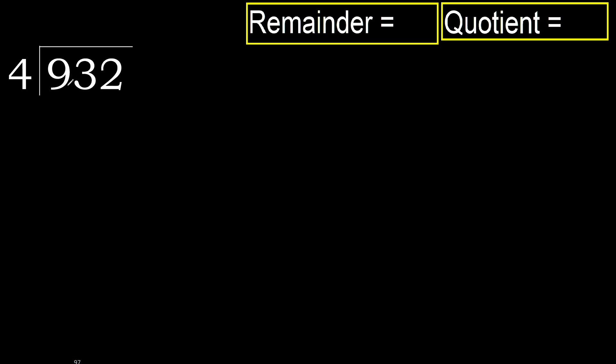932 divided by 4. 9 is not less, therefore with 9: 4 multiplied by which number is nearest to 9, but not greater?